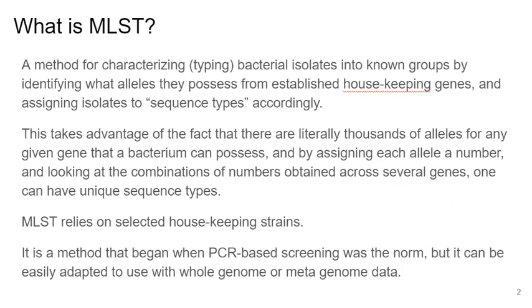This methodology takes advantage of the fact that there are literally thousands of alleles for any given gene that a particular type of bacterium can possess, and that each allele can be arbitrarily assigned an allele number. It doesn't matter how much the alleles differ from one another — it just matters that they are different. They could differ by one nucleotide or by several, but they're different and therefore get assigned their own allele number. If you have allele numbers for each of a set of designated housekeeping genes, you can look at the combination or pattern of those numbers as a code, or sequence type, and assign and track the isolate by sequence typing.